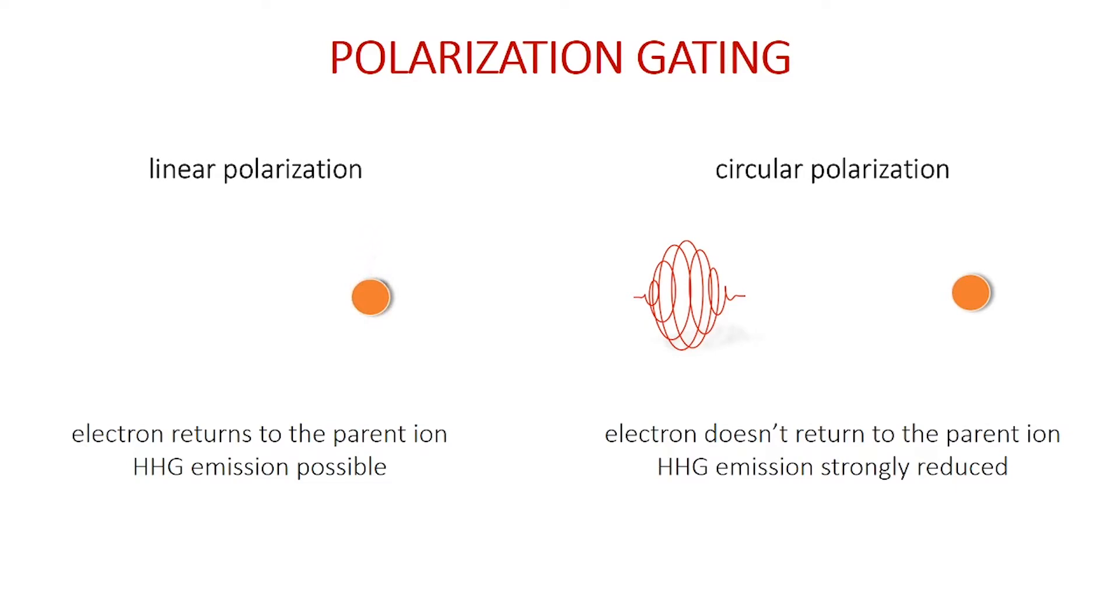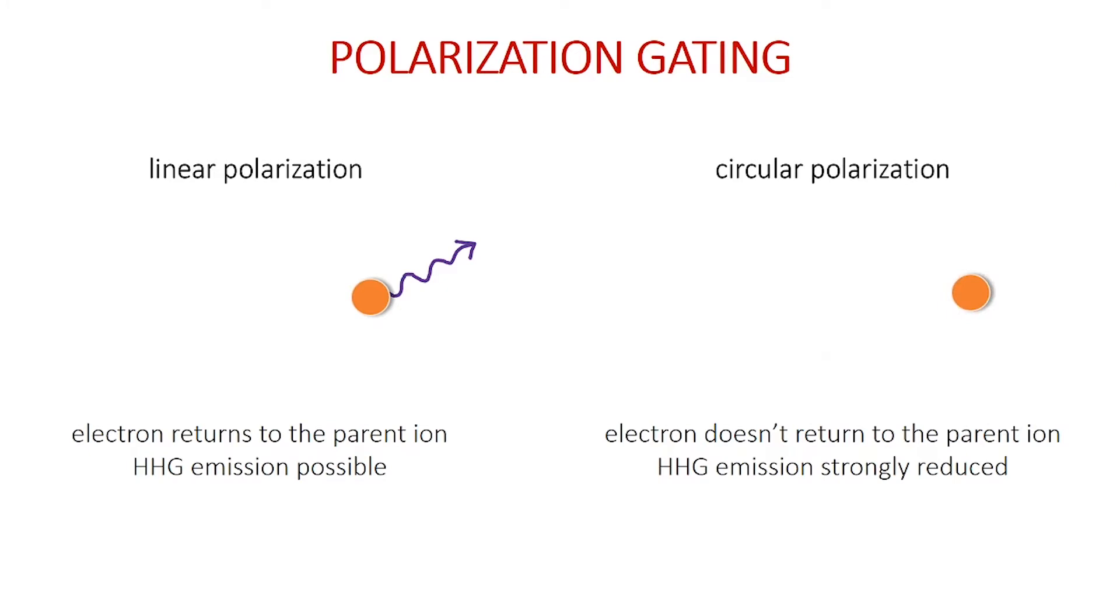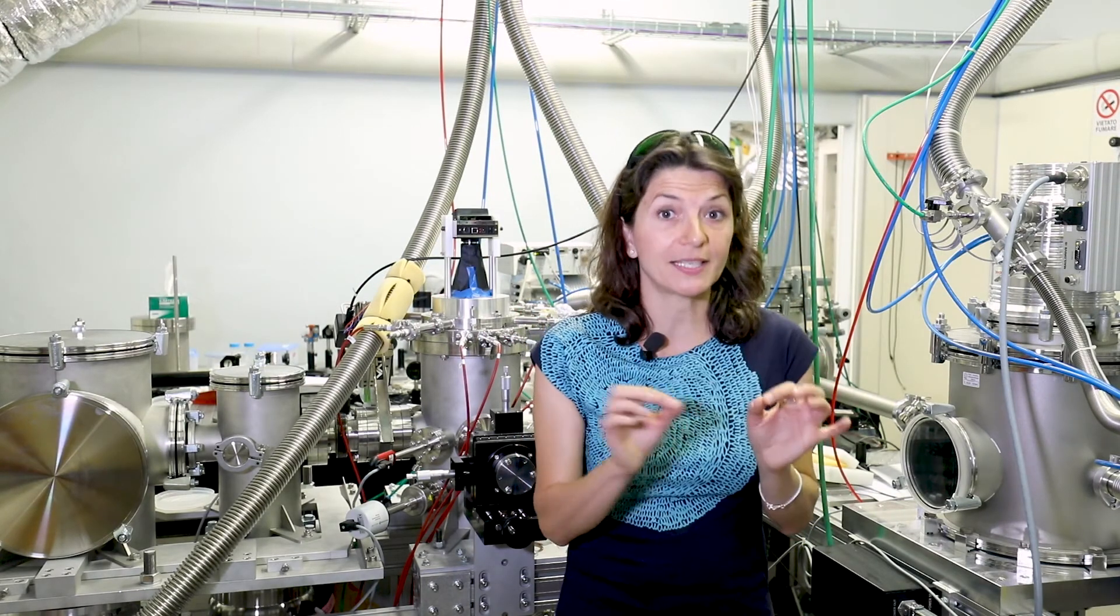Harmonic emission strongly depends on the polarization direction of the driving field and can be strongly suppressed by an elliptically polarized driving field, since the electron is driven away from the parent ion and cannot recombine. Thus, an isolated attosecond pulse can be generated if the polarization of the driving pulse is manipulated so that the leading and trailing edges are elliptically polarized while the central portion is linearly polarized.